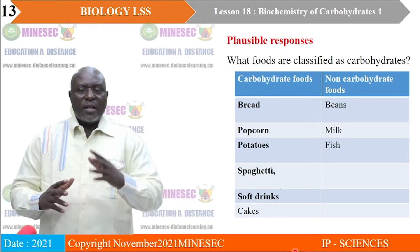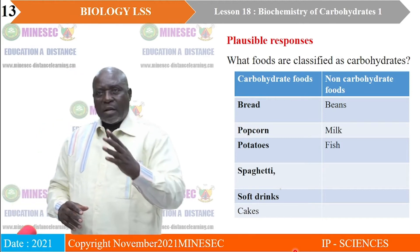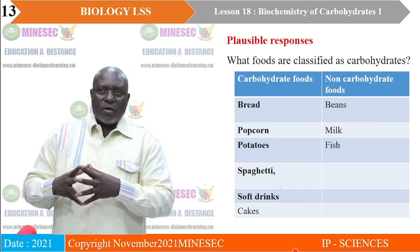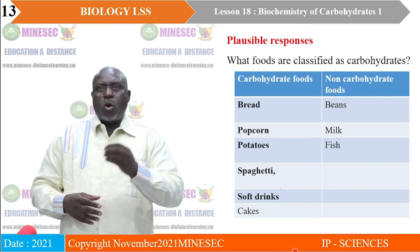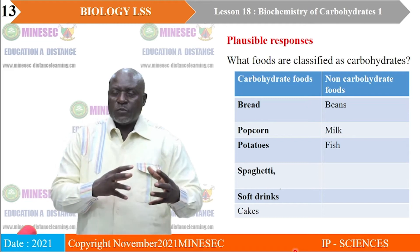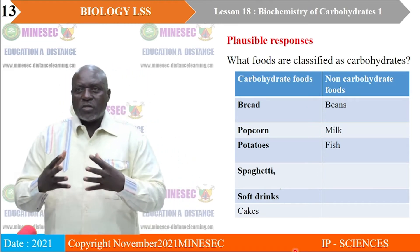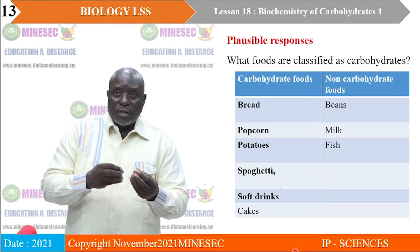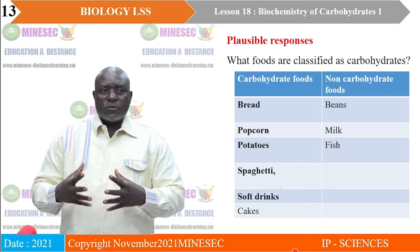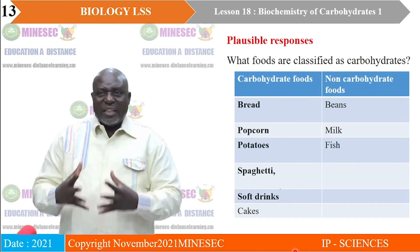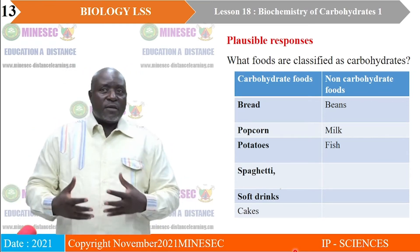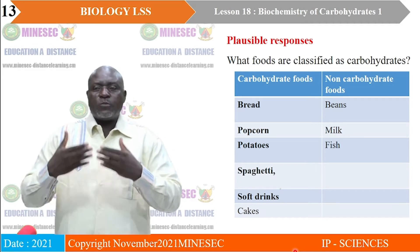On the left side of the table are the foods that are carbohydrate-based; on the right side are those that are not. Bread has a lot of carbohydrates — it is from a wheat or grain source. Popcorn is made from corn, which is a principal source of carbohydrate. Potatoes and their tubers have a lot of carbohydrate. Spaghetti is made from cassava, which also has a lot of carbohydrate. Soft drinks bought from supermarkets contain a lot of sugar. Cakes are baked from flour, which comes from cassava, potatoes, or a variety of carbohydrate sources.